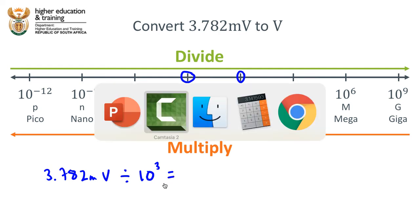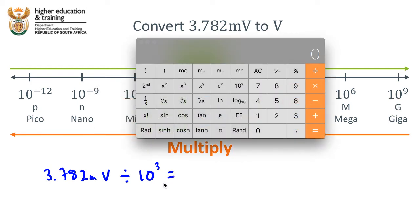I'm going to do that on a calculator. 3.782, you type that in, divided by 10 raised to the exponent of three, and you'll get 0.003782.